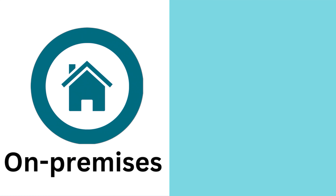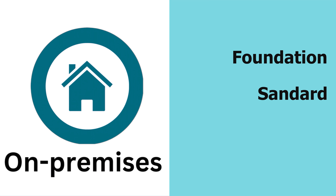On the other hand, the on-premises version requires more resources, maintenance, and management because it is installed locally on your system, so you need to manually manage and maintain everything yourself. SharePoint On-Premises is available in three editions: Foundation, Standard, and Enterprise, each offering different levels of features and functionality.